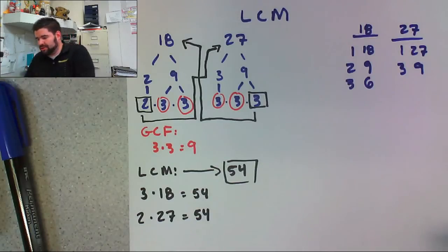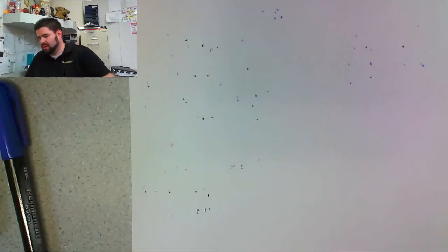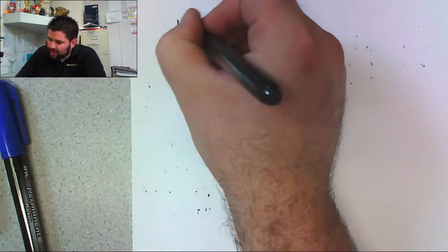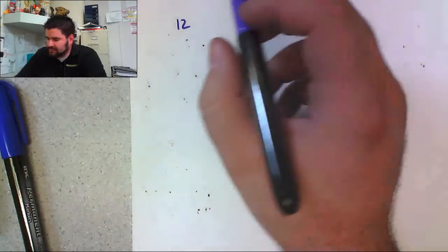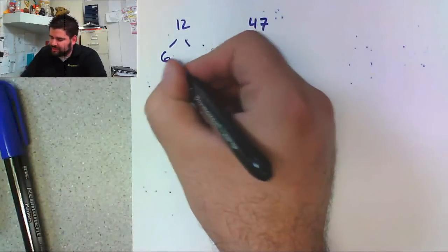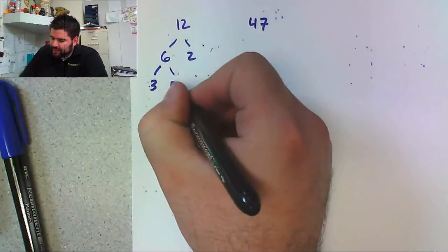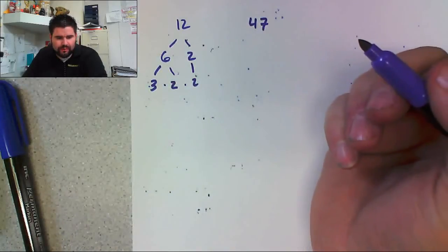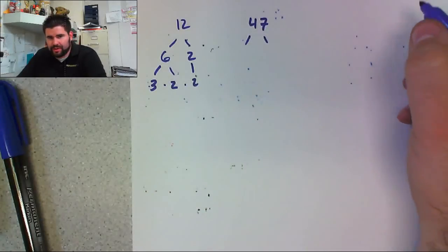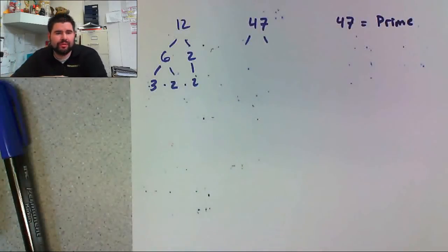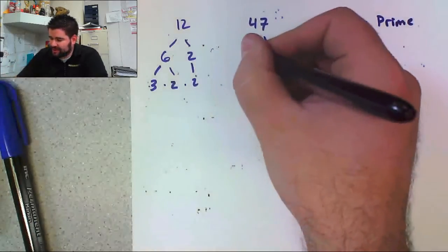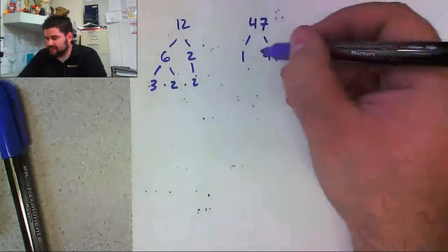Today we came up with a challenge question in class. In this case, we started off with 12 and 47. My students can all factor 12, which is 6 and 2, factoring down to 3 and 2. Those are the prime factors of 12. But 47 is a weird one because 47 is a prime number — a number that can only be divisible by 1 and itself. So the prime factorization of 47 is actually 1 and 47.